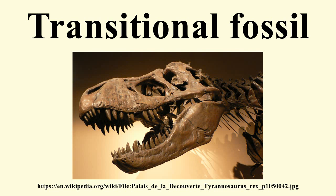The idea that animal and plant species were not constant but changed over time was suggested as far back as the 18th century. Darwin's On the Origin of Species, published in 1859, gave it a firm scientific basis. A weakness of Darwin's work, however, was the lack of paleontological evidence, as pointed out by Darwin himself. While it is easy to imagine natural selection producing the variation seen within genera and families, the transmutation between the higher categories was harder to imagine.